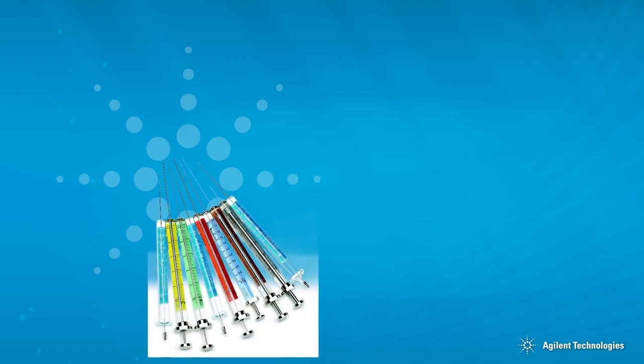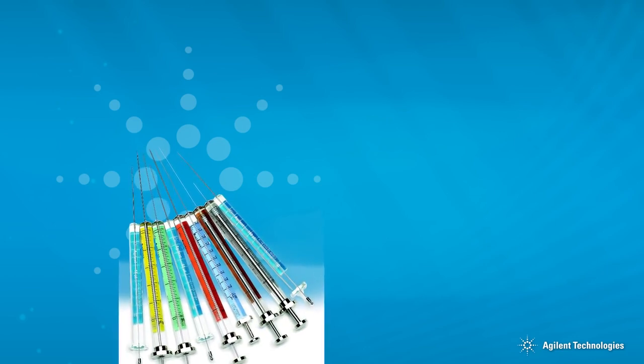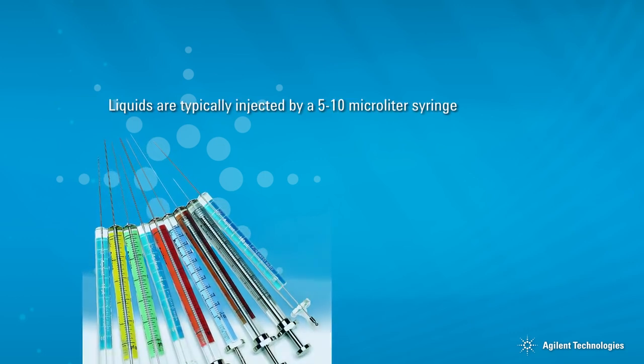Here are some other types of GC samples. Most commonly, liquids are analyzed by injecting them into a heated GC inlet or injection port using a 5 or 10 microliter syringe.